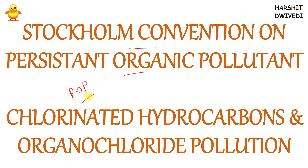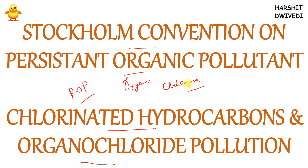Persistent organic pollutants were a big problem in the 1990s, in the first decade of the 21st century, and they are still a big problem now. To understand what persistent organic pollutants are, we need to first understand chlorinated hydrocarbons — also called organochlorides — which are organic materials that contain chlorine.